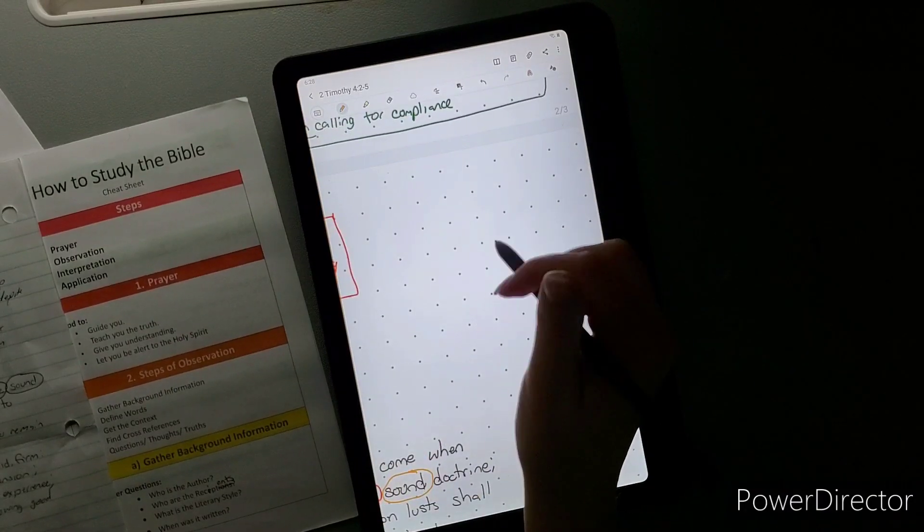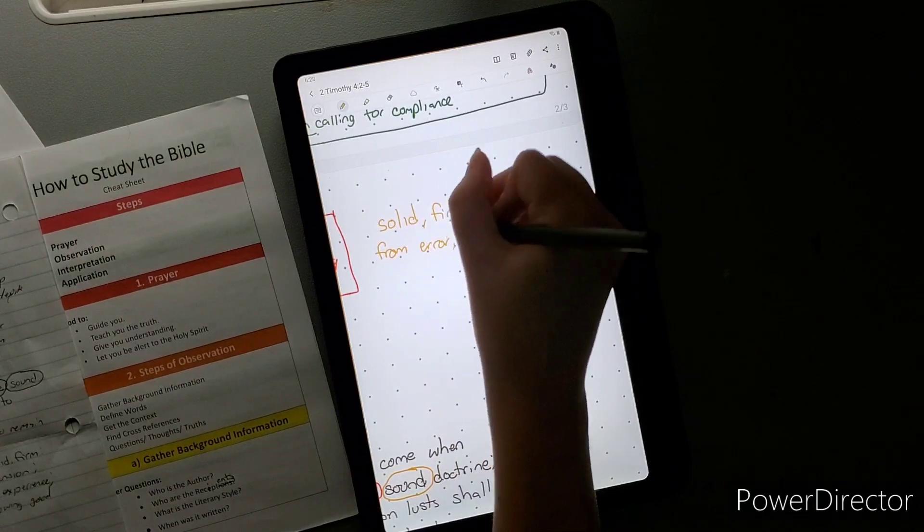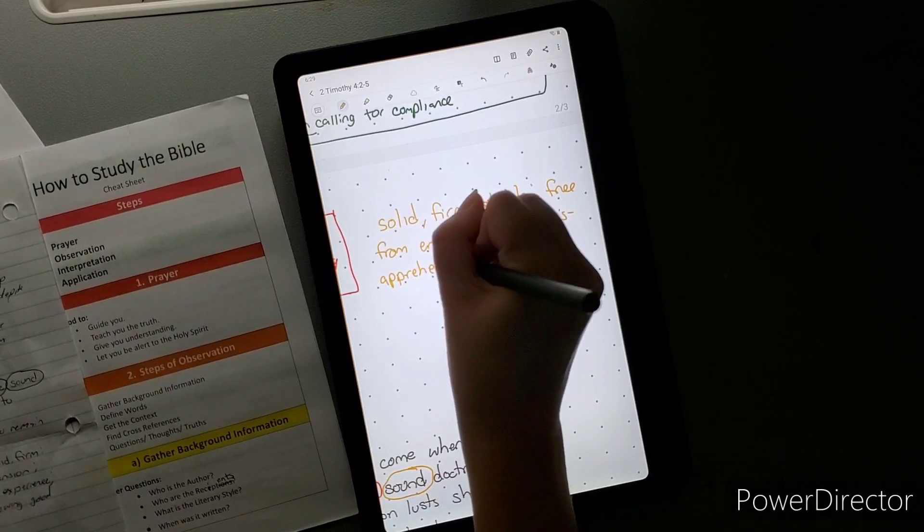That's why it's so important to make sure you're reading in context, make sure you know all of the how to study things that I hopefully teach to help that we do interpret correctly. The next thing is but after their own lust. Lust is intense longing, craving, desire, or pleasure. They shall heap. Heap is to pile or collect in great quantity.